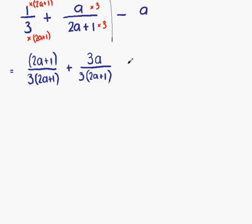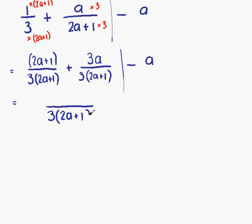We don't want to forget about minus a, so we'll tag that on at the end and deal with it in a moment. Looking at the two fractions we're dealing with first, we now have two fractions with a common denominator, so we can write them as a single fraction with denominator 3 times (2a plus 1), and on the top: 2a plus 1, add 3a. We'll tag our minus a on at the end.